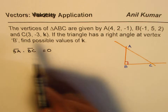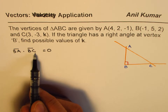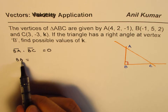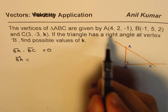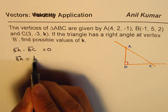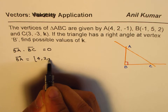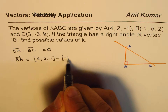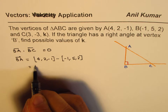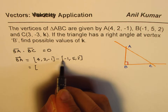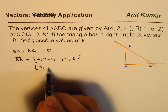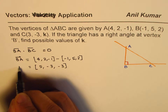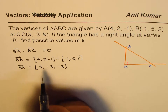We know what A, B, and C are, so we can find BA and BC and then their dot product. Let's find BA. BA will be A minus B. A is (4, 2, -1) and B is (-1, 5, 2). That gives us: 4 plus 1 is 5, 2 minus 5 is -3, and -1 minus 2 is -3. So vector BA is (5, -3, -3).